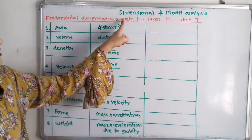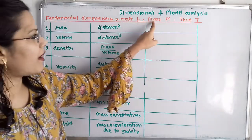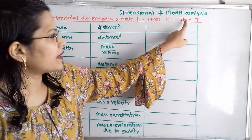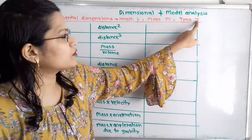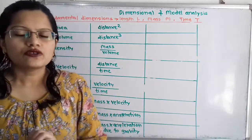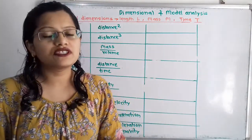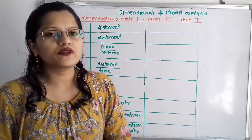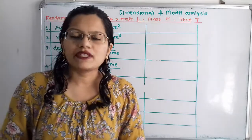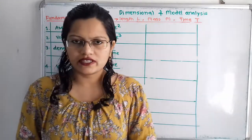Here is the length denoted as capital L, mass denoted as capital M, and time denoted as capital T. In terms of these fundamental dimensions, we have to decide the other dimensions for the physical quantities.